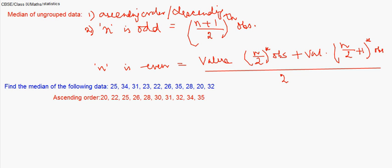In this case, because the number of observations is even, n/2 is 10/2, which is 5. So the value of the fifth observation is 26, plus the value of the sixth observation. Fifth and sixth observations are 26 and 28.